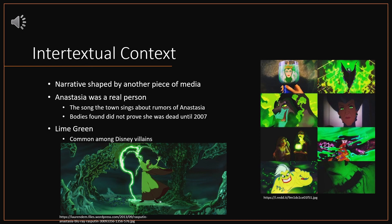Later DNA testing proved that the four bodies found were not Anastasia. But in 2007, two missing bodies of the Romanov family were found, and one has been linked to Anastasia. So the context of the rumors around her survival were rooted in real historical events. The second intertextual element is the lime green color — many Disney villains have scenes where lime green is used as the lighting and background color during their songs, and when we see this around Rasputin, it connects him to being a Disney villain through that visual convention used across many other Disney films.